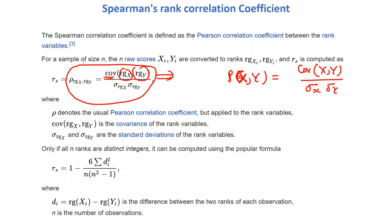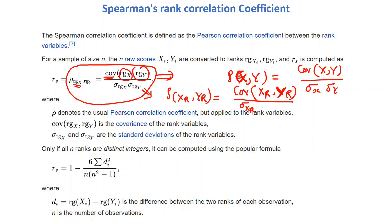Similarly, we can write the Spearman correlation coefficient in terms of rank of x and rank of y as: covariance of rank(x) and rank(y) divided by standard deviation of rank(x) times standard deviation of rank(y). Both equations are similar, but in Pearson we use variable x and variable y directly, whereas in Spearman we use the rank of x and rank of y, and their corresponding standard deviations.